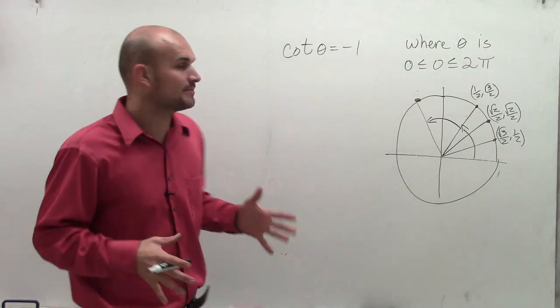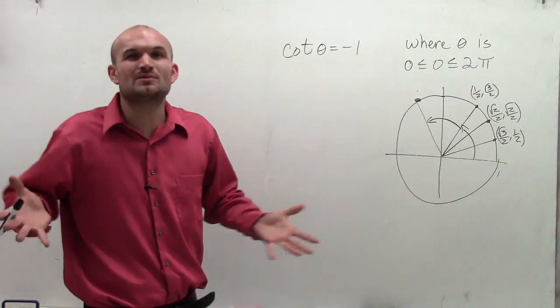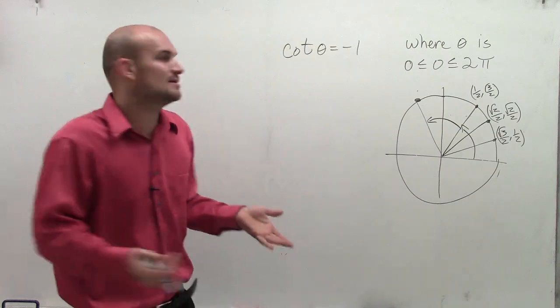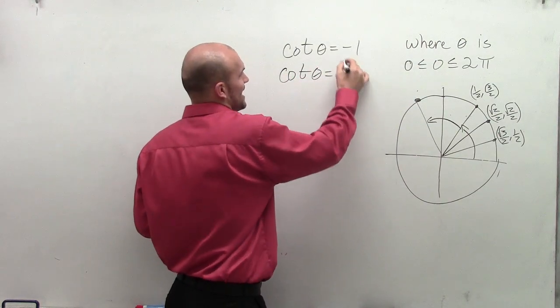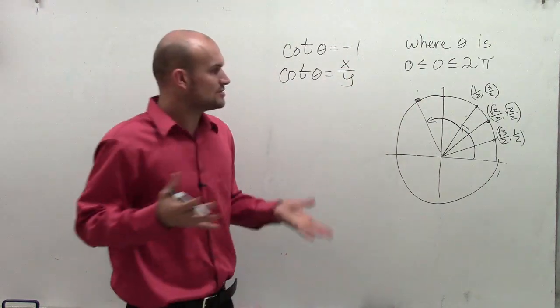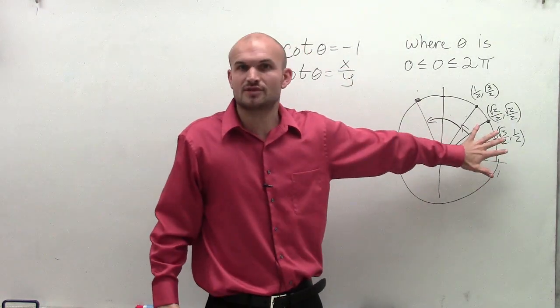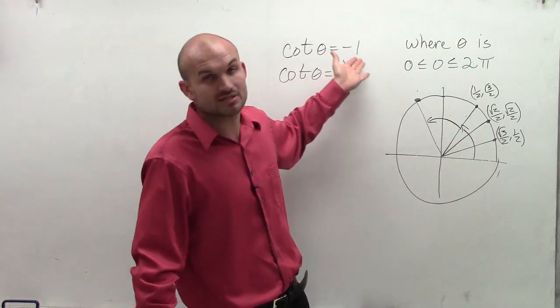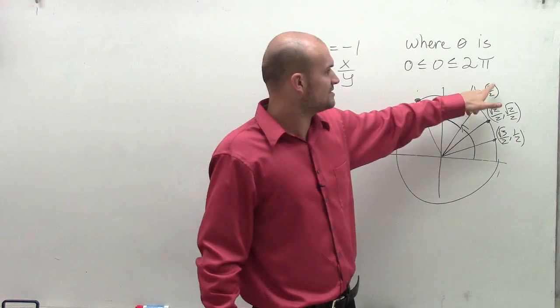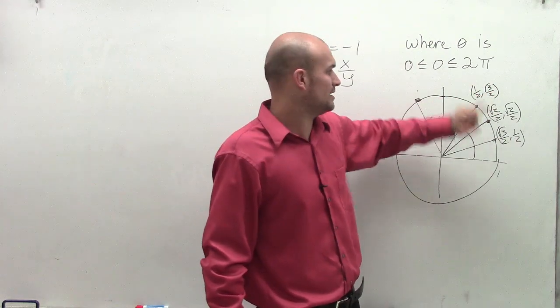So the first thing I'm going to want to do is understand what does the cotangent of an angle represent? Well, remember the cotangent of an angle represents the x over the y coordinate. So what I simply need to do is look at my major coordinates just in the first quadrant and see which one of these would produce a ratio that's equal to negative 1. So I take my x over my y.